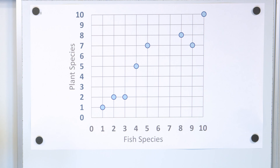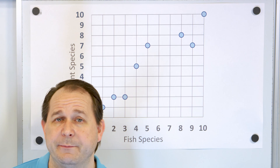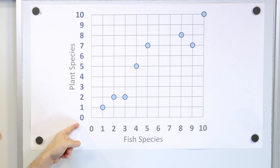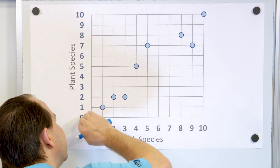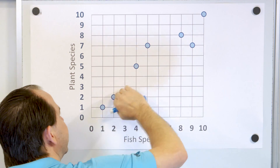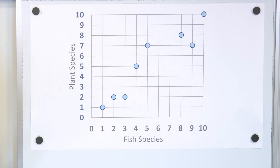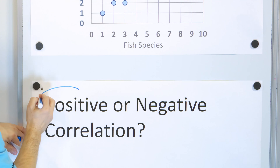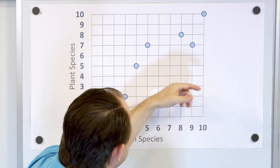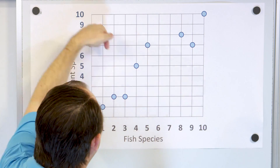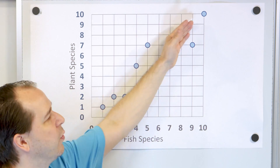So the question is: is this data correlated? Does there appear to be a relationship? It appears that as the number of fish species increases, the number of plant species also increases. You could draw a line through this data and see that as one goes up, the other goes up — that's called a positive correlation. If the data were going down — as the species of fish go up, the plant species goes down — that would be a negative correlation. This is a positive correlation.